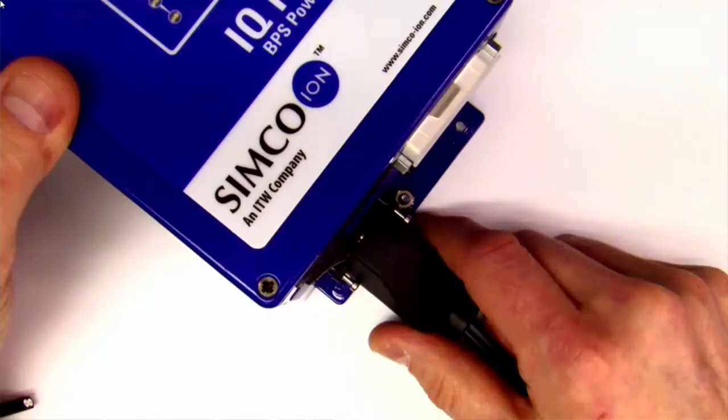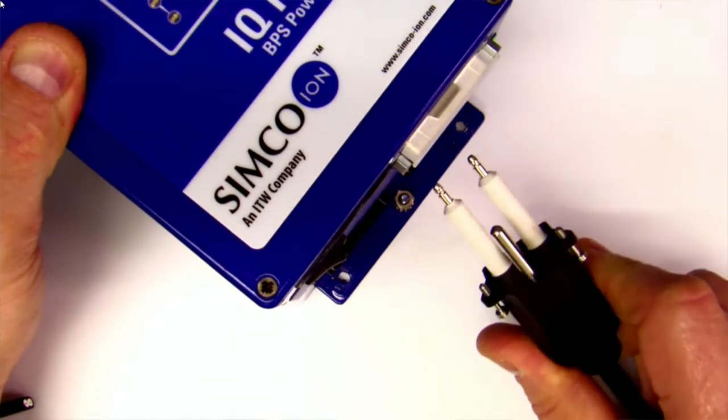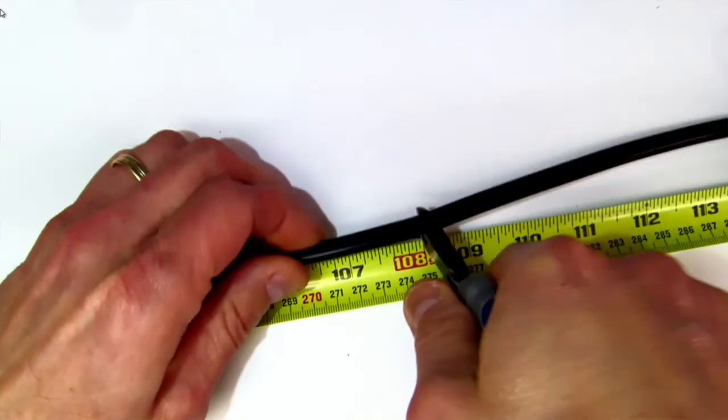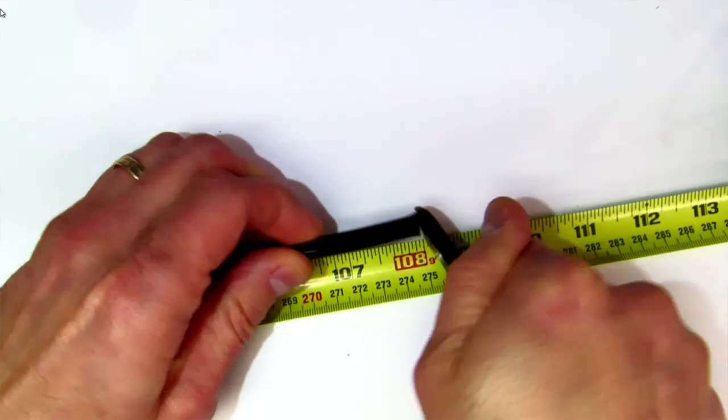First, ensure the high voltage cable is disconnected from all electrical sources for safety. Then, cut the high voltage wire to the overall length if required.